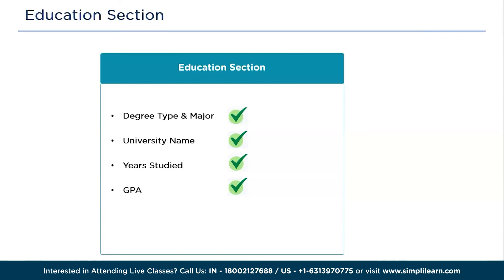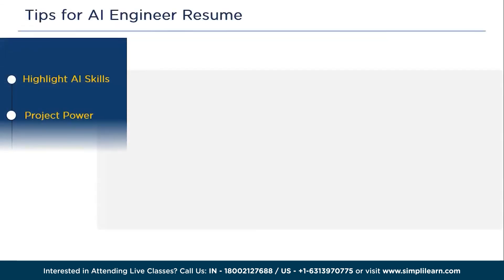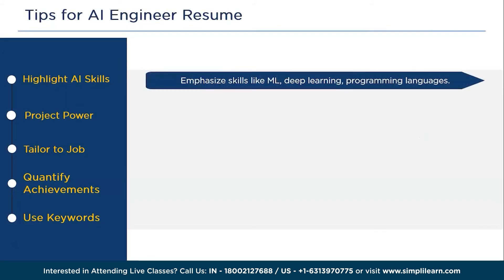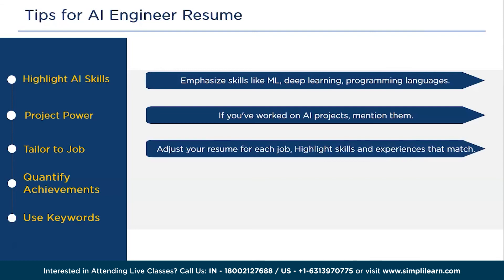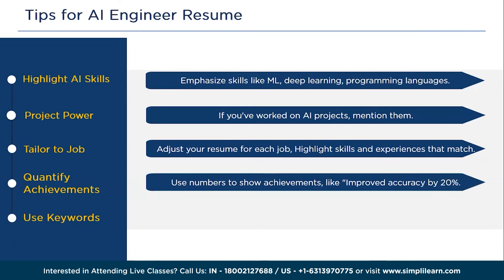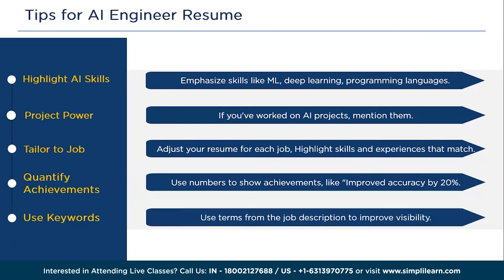Now for some tips for AI engineer resume. First, highlight AI skills — emphasize skills like machine learning, deep learning, and programming languages like Python. Second, project power — mention AI projects, whether class projects or personal ones, to prove your practical abilities. Third, tailor to the job — adjust your resume for each job, highlighting skills and experiences that match requirements. Quantify achievements — use numbers like 'improved accuracy by 20%' for more impact. Finally, use keywords — many companies scan resumes with software, so use terms from the job description to improve visibility.